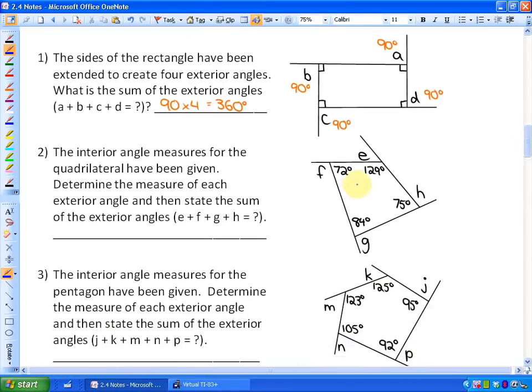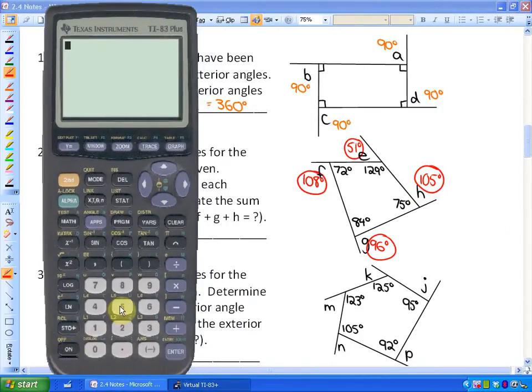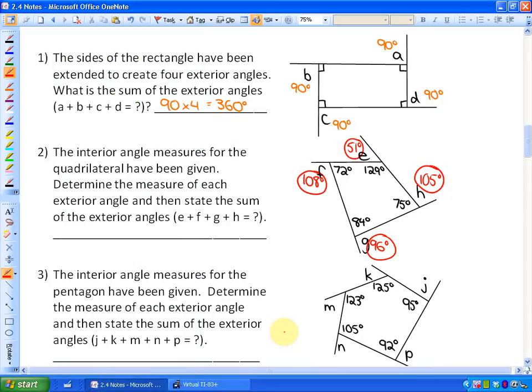If we look at a different quadrilateral, so here's another shape. Its interior angles, quadrilateral interior angles, add up to 360 degrees, as we learned in the previous activity. Now if we look at the supplements, 51 and 129, that adds up to 180 degrees. 72 and 108 adds up to 180 degrees. 84 and 96 adds up to 180 degrees. And finally, 75 and 105 adds up to 180 degrees. So this question says, determine the measure of each exterior angle, which we just did, and then state the sum of the exterior angles. So if I just add up what those exterior angles are, let's find that out. 51 plus 108 plus 96 plus 105, and that is 360 degrees.